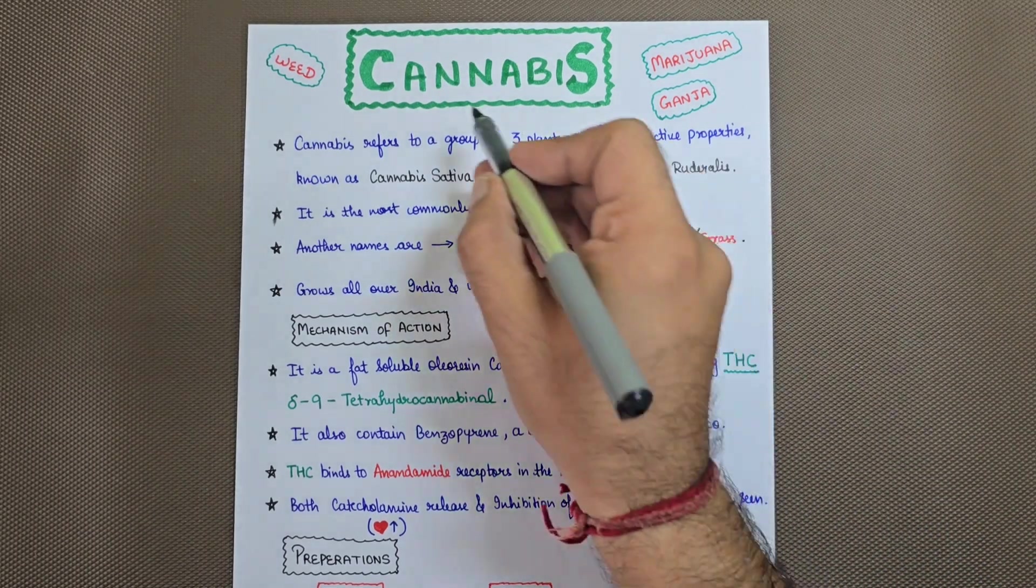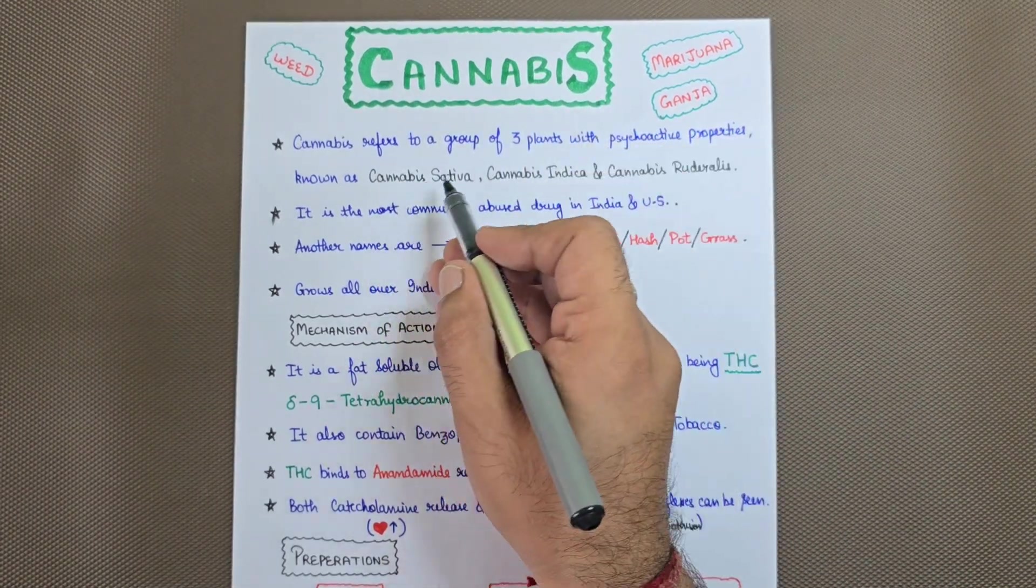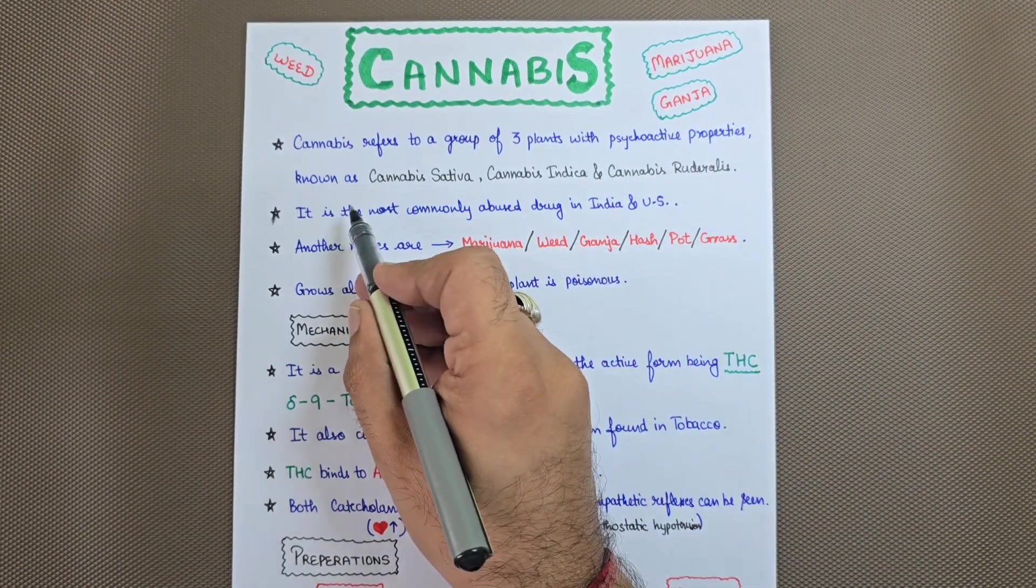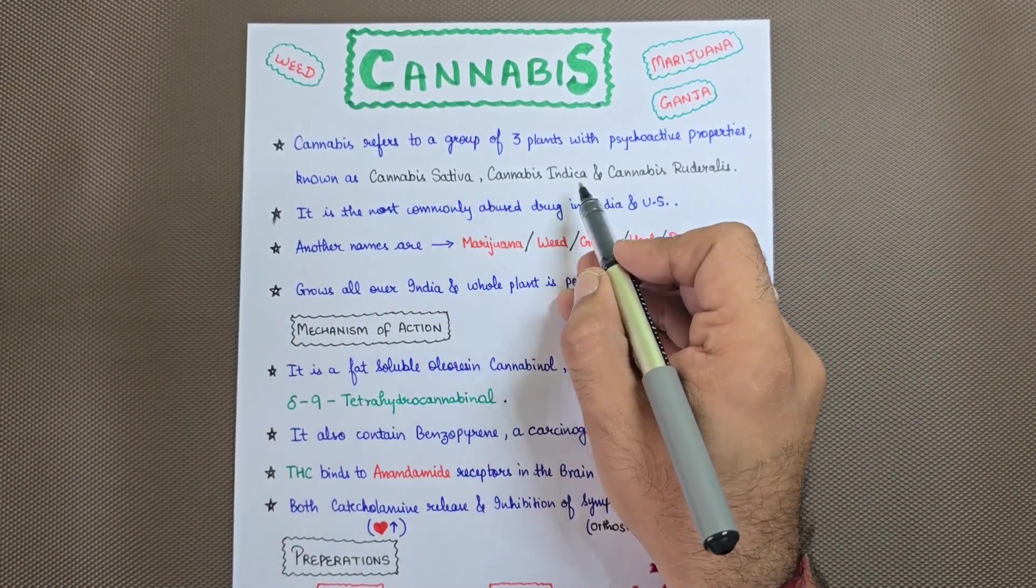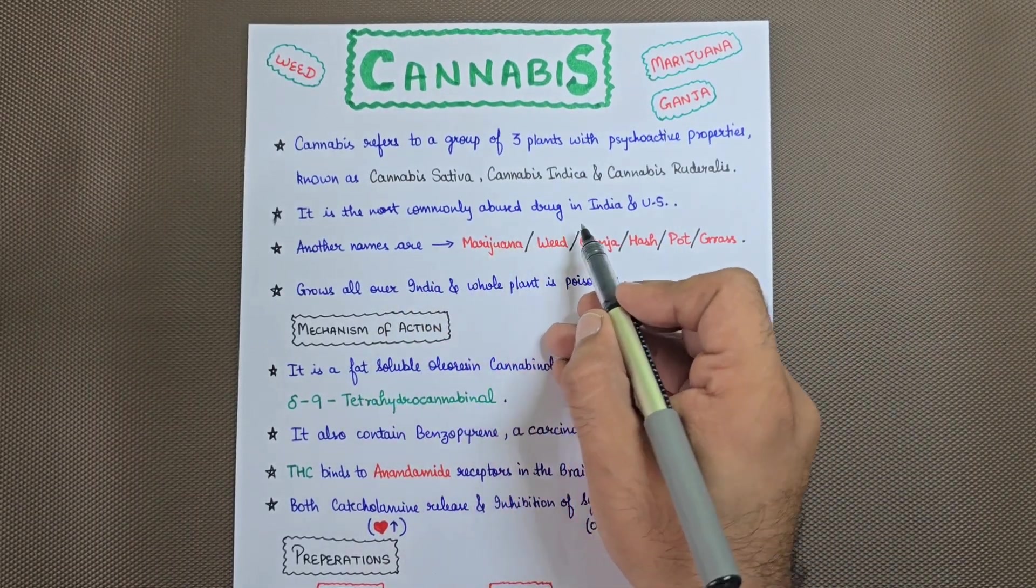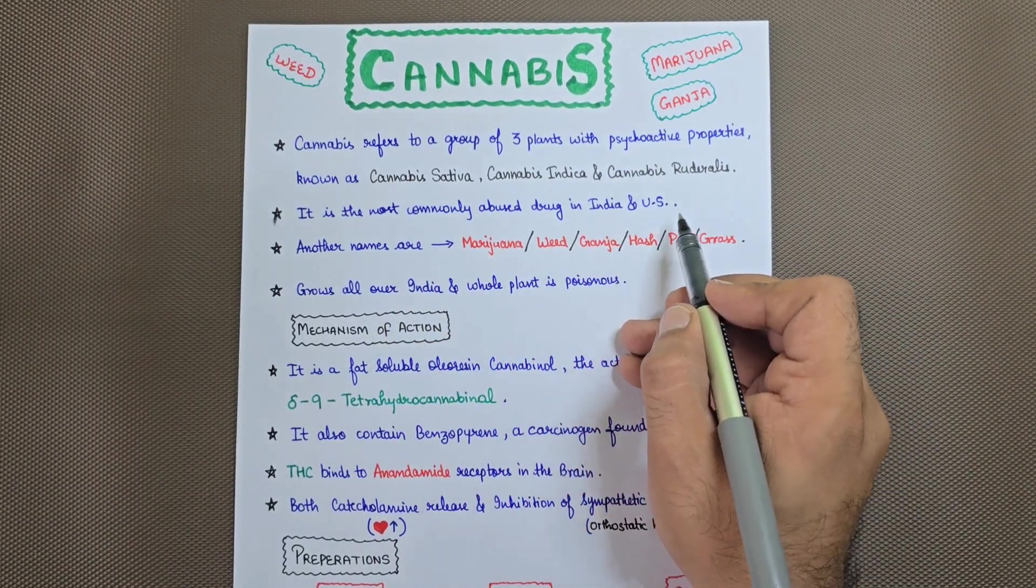Hello everyone, in this video I am going to tell you about cannabis. Cannabis refers to a group of three plants with psychoactive properties known as Cannabis sativa, Cannabis indica, and Cannabis ruderalis. It is the most commonly abused drug in India and the United States.